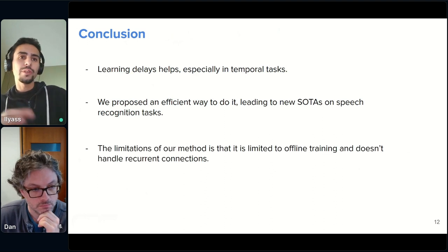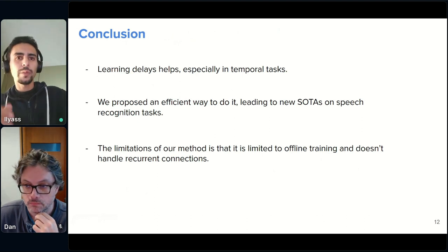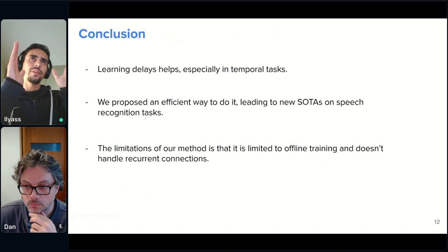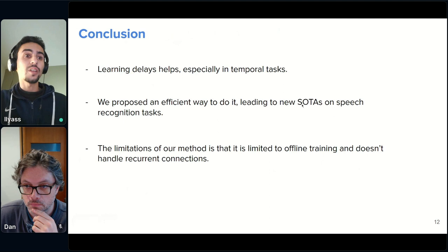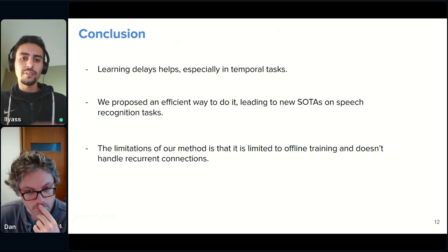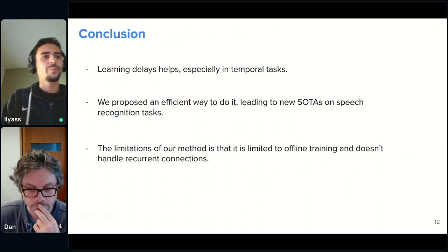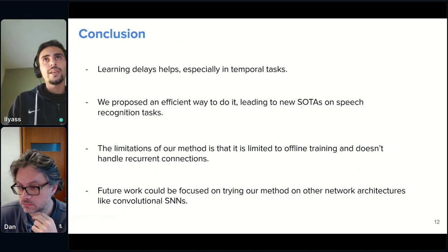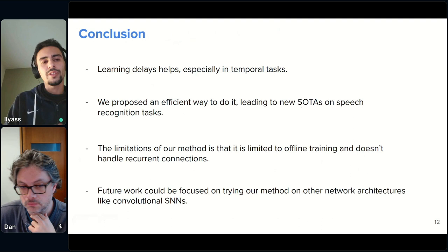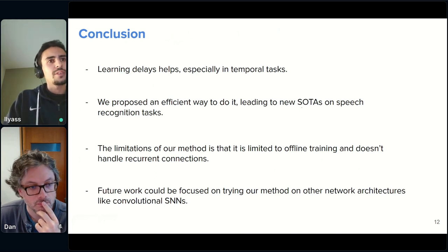Some of the major limitations of our method is that it is limited to offline training. That is because we, firstly, we use backpropagation through time and that we need to have a certain number of time steps before convolving the kernel. And it also doesn't handle recurrent connections because the modernization was based on the assumption that it's a feedforward network. What we're thinking about and for future work is that maybe trying our method on new network architectures like convolutional SNNs could be really interesting to see if delays also help in vision tasks.